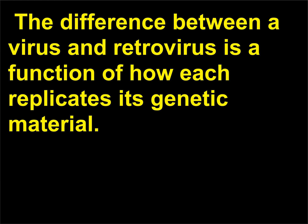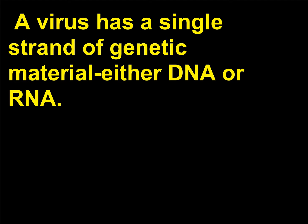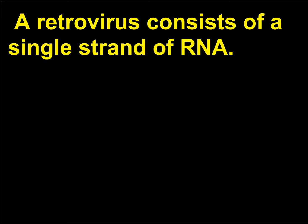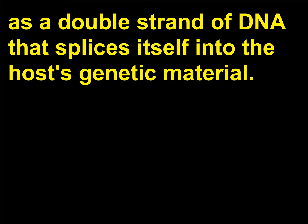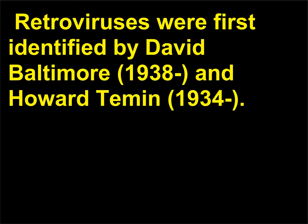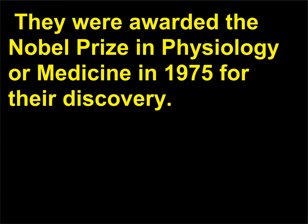The difference between a virus and a retrovirus is a function of how each replicates its genetic material. A virus has a single strand of genetic material, either DNA or RNA. A retrovirus consists of a single strand of RNA. Once a retrovirus enters a cell, it collects nucleotides and assembles itself as a double strand of DNA that splices itself into the host's genetic material. Retroviruses were first identified by David Baltimore and Howard Temin, who were awarded the Nobel Prize in Physiology or Medicine in 1975 for their discovery.